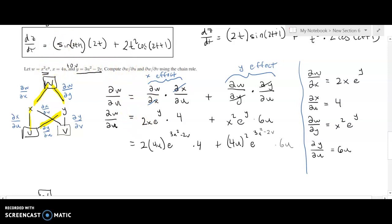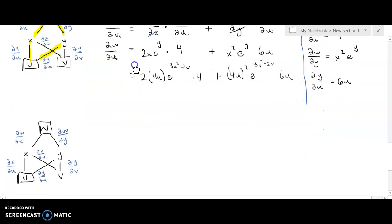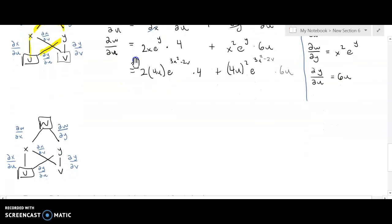So to compute the next one, in order to get dw/dv, what we need to do is follow the same chain of events. But now we need to get there by saying, how is w affected by v? Well, w is affected by v through x and then x through v. So that tells us exactly what to multiply together.